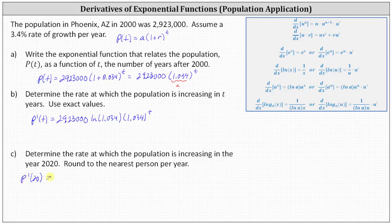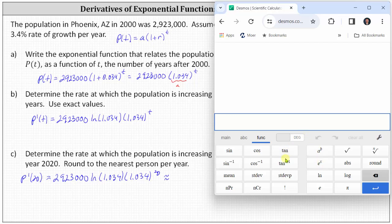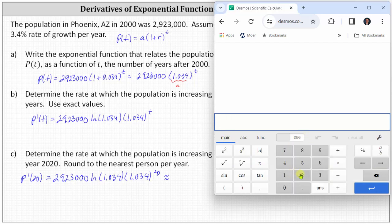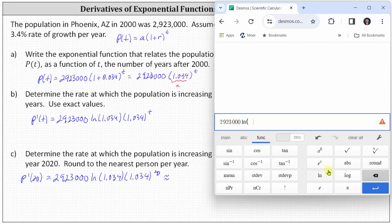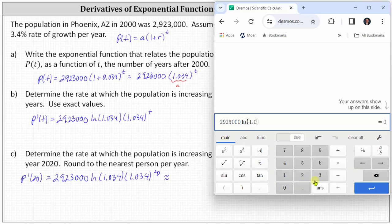which is equal to 2,923,000 times natural log of 1.034 times 1.034 raised to the power of 20. And now we go to the calculator. I'm using the Desmos scientific calculator, and then we simply enter 2,923,000 times natural log. We can find natural log under the functions tab. Go back to the main tab, enter 1.034, close parenthesis, open parenthesis, 1.034, close parenthesis, raise to the power of 20. To the nearest whole number, we have 190,738.